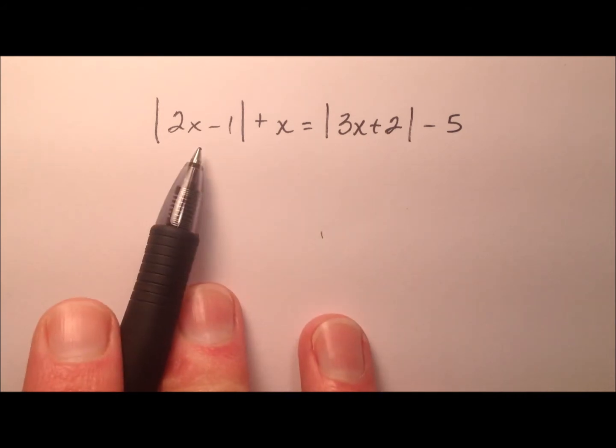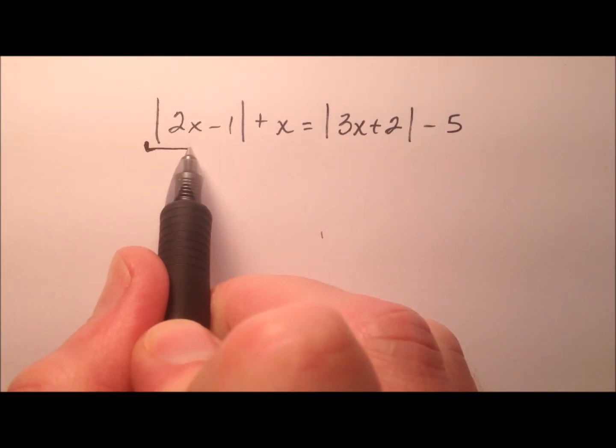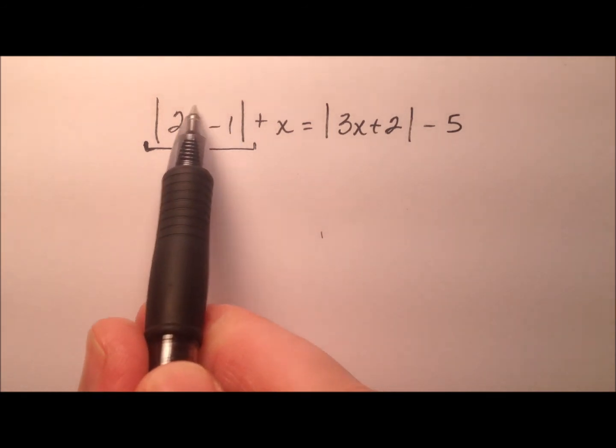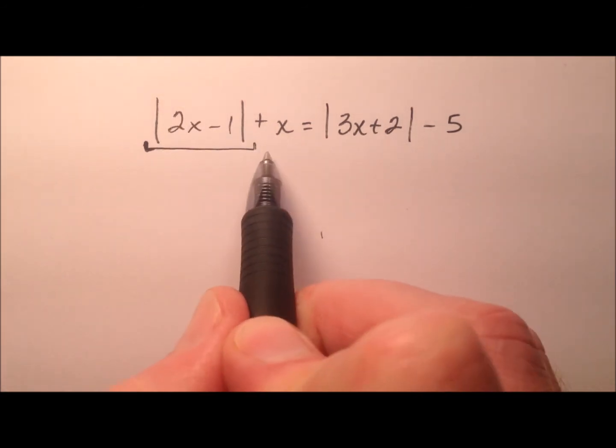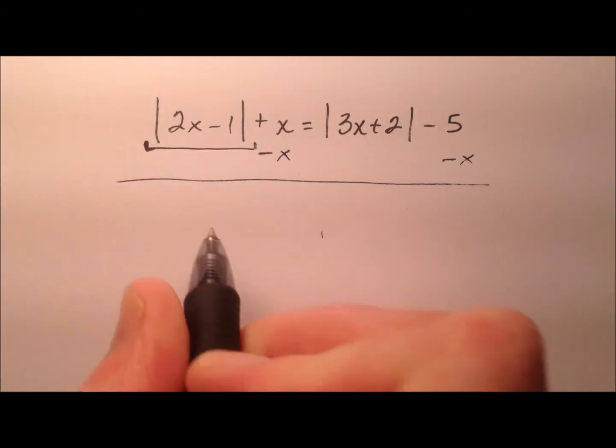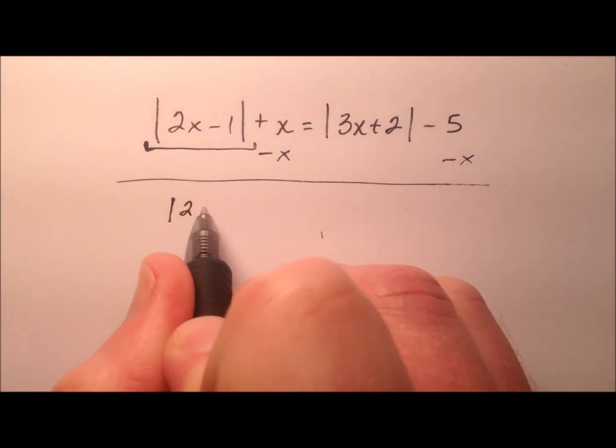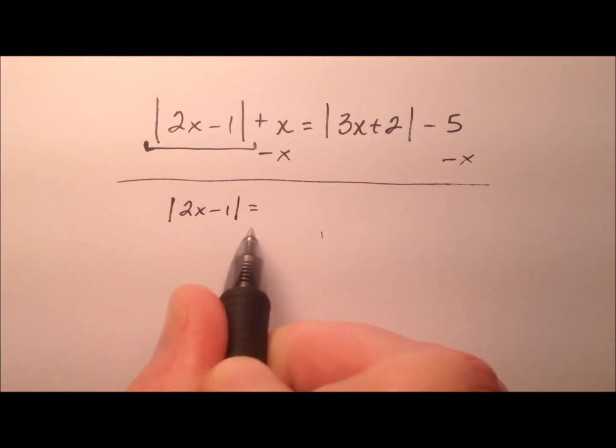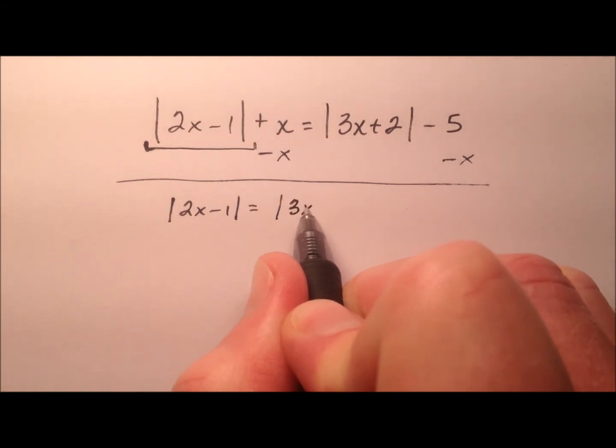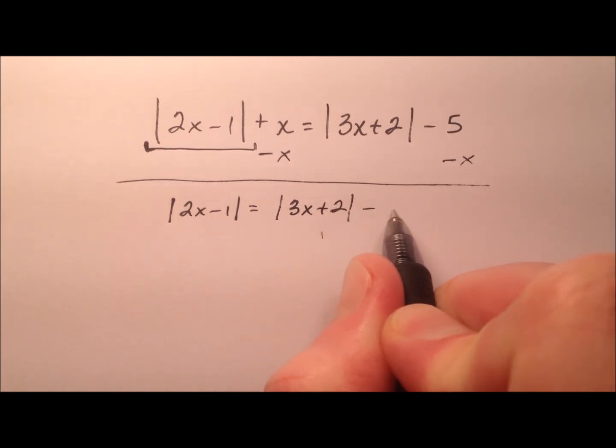Well, it looks like we have two of them, so let's just go ahead and choose one. And we'll go ahead and choose this first one, this 2x minus 1. So we'll isolate this absolute value expression and we'll do so by subtracting x from both sides. So I have the absolute value of 2x minus 1 all by itself on the left side of the equation and that equals the absolute value of 3x plus 2 minus x minus 5.